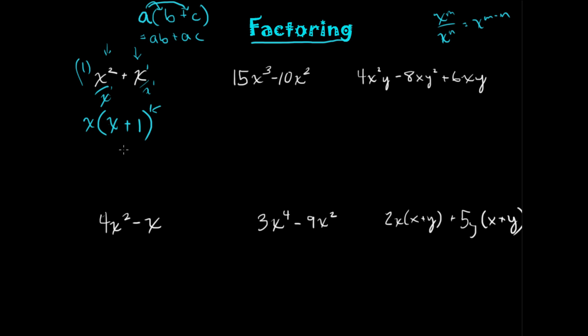Notice what happens if we apply the distributive property. I distribute the X back through each one of these terms: X times X is X squared, X times 1 is X. And notice we're right back where we started. So factoring is simply the reverse process of distributing.